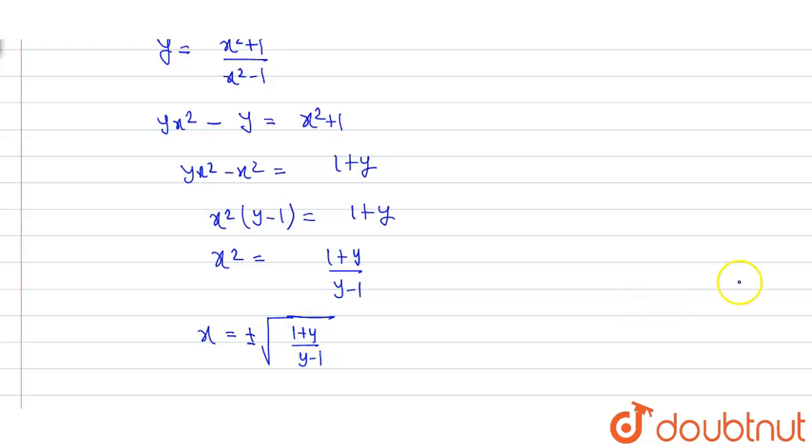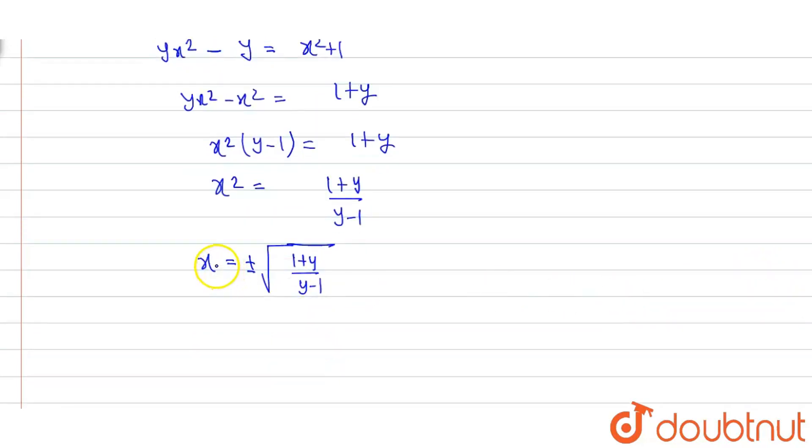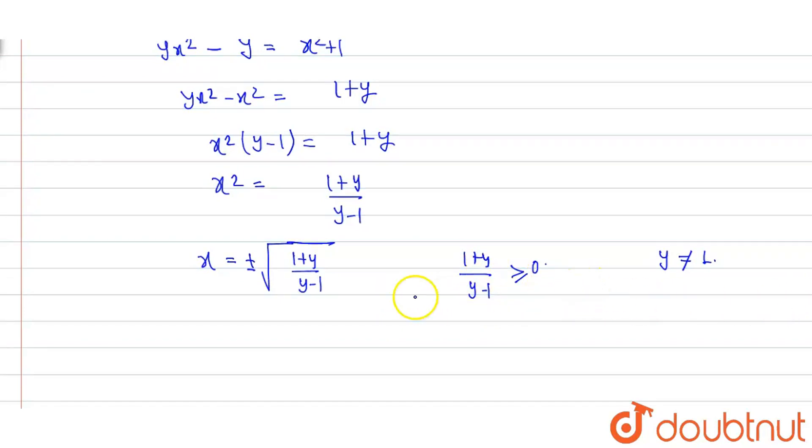So x must be equal to plus or minus square root of 1 plus y upon y minus 1. Now we know that x has real values when we have 1 plus y upon y minus 1 greater than or equal to 0.